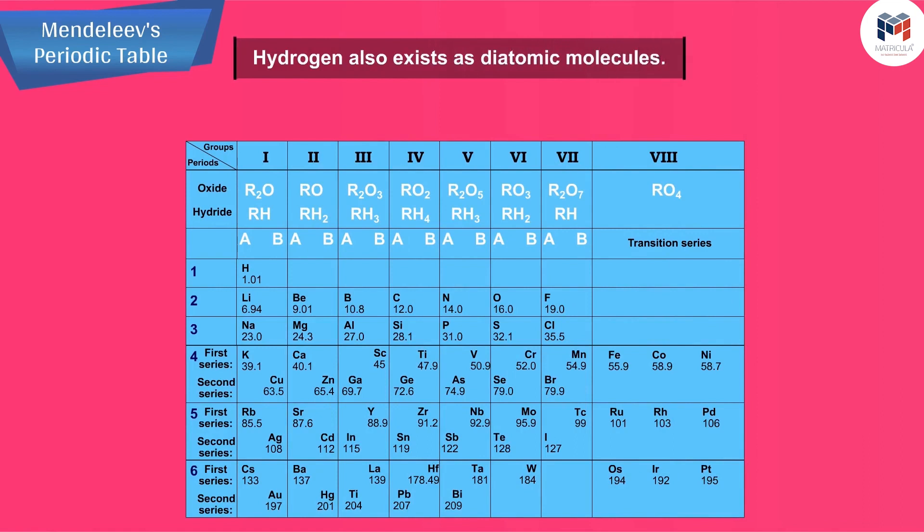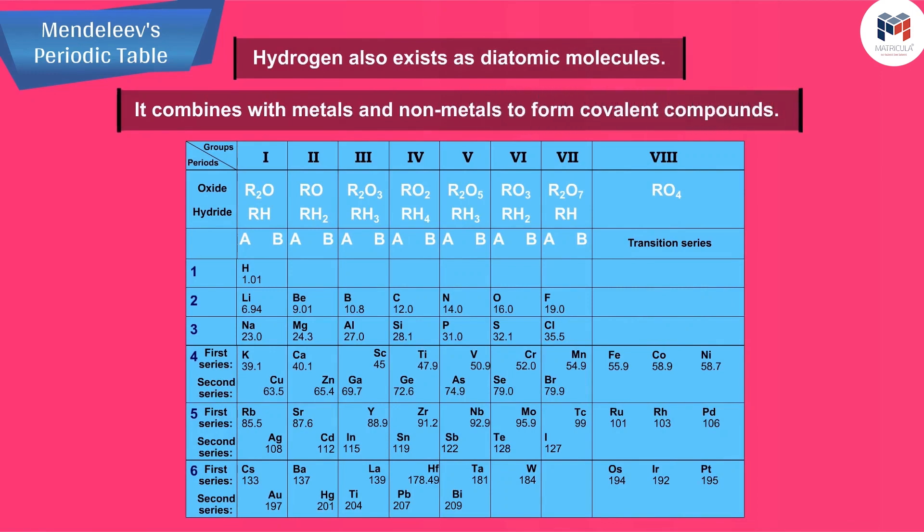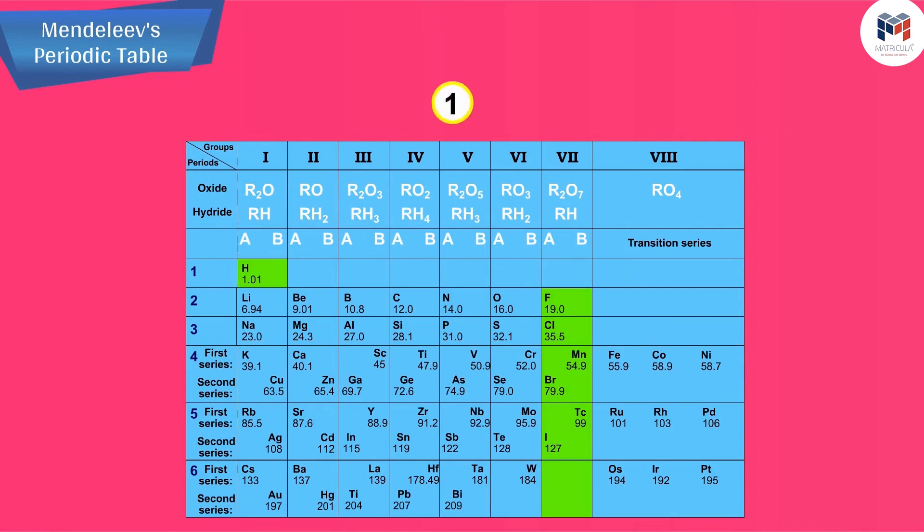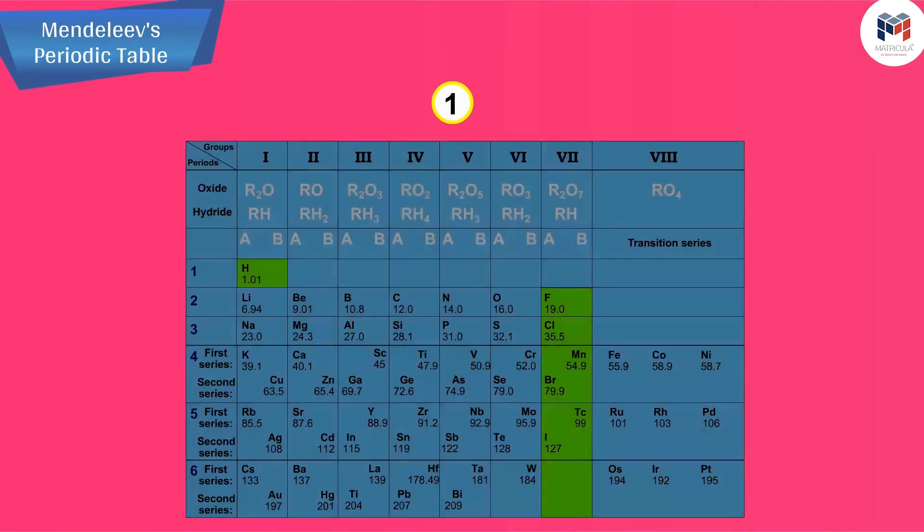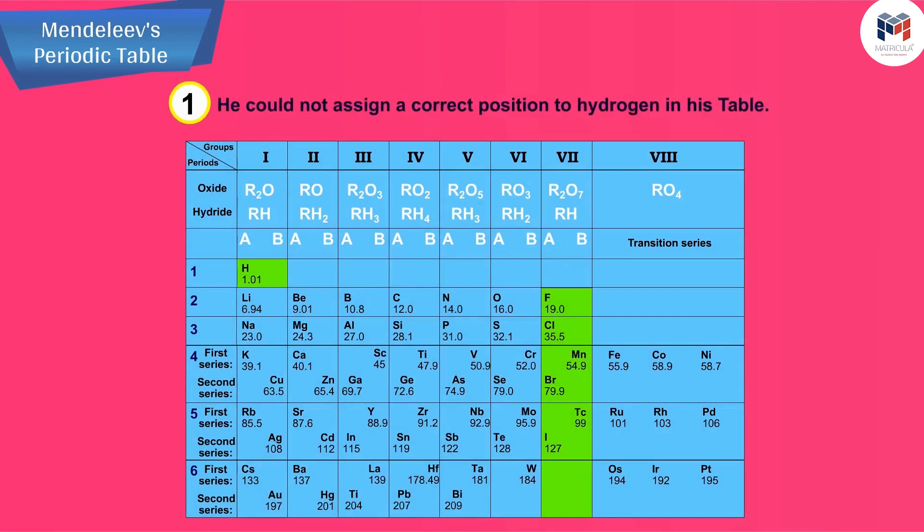It combines with metals and nonmetals to form covalent compounds. No fixed position can be given to hydrogen in the periodic table. This was the first limitation of Mendeleev's periodic table. He could not assign a correct position to hydrogen in his table.